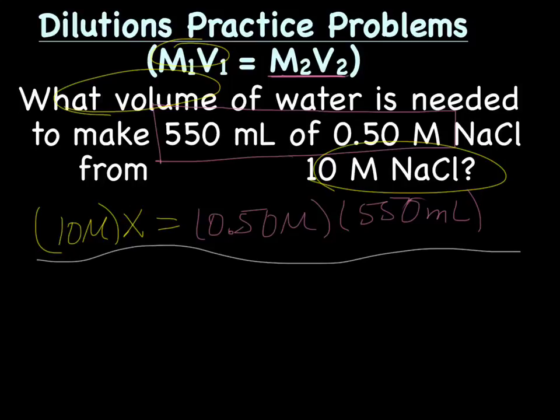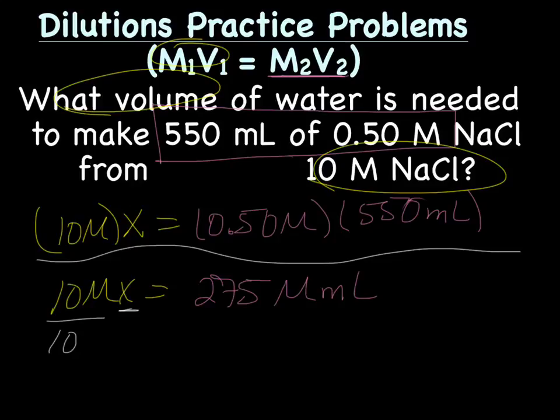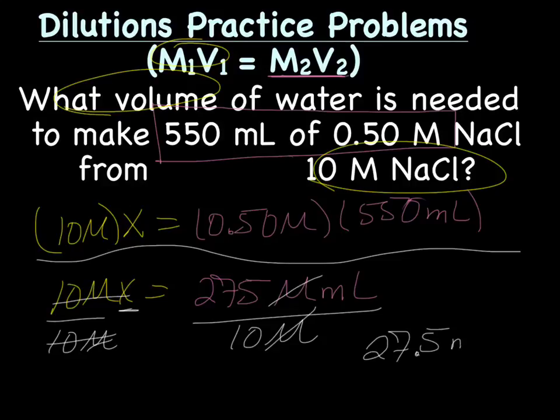All right. So when we do the calculations, we're going to end up with 10 molar X equals, let's see, 275 molar milliliter. Now to get the X by itself, it's on the left again. So we're going to divide both sides by 10 molar, allowing the molar to cancel out. And that gives us 27.5 milliliters.